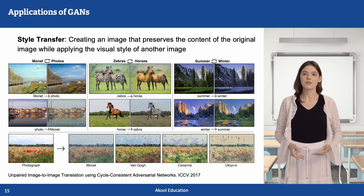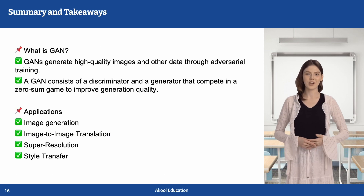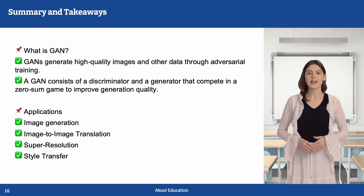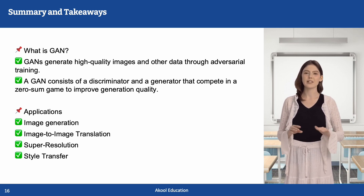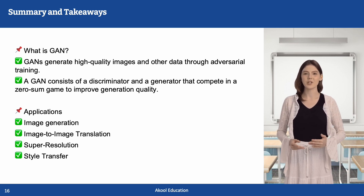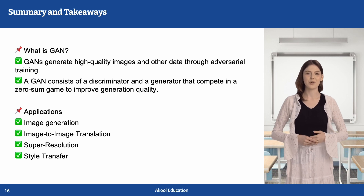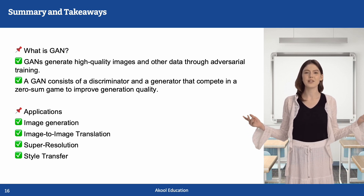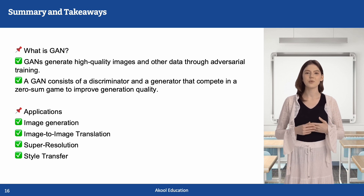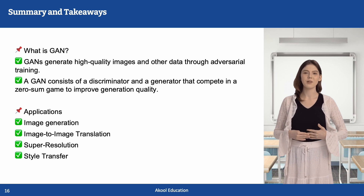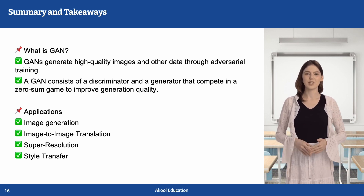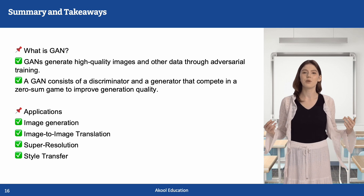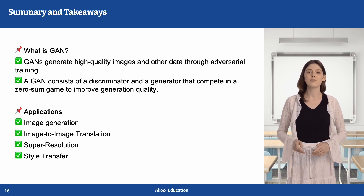Before we conclude, let's summarize the key takeaways. GANs are a powerful deep learning framework used for generating high-quality images and other types of data. The key idea is adversarial training, where a generator and a discriminator compete against each other — the generator creates realistic samples while the discriminator distinguishes real from generated data. Through this continuous competition, both networks improve, leading to highly realistic outputs. GANs have revolutionized image generation, image-to-image translation, image super-resolution, and style transfer, making them a fundamental tool in computer vision and AI-driven creativity. Thank you for your attention. See you in the next topic.